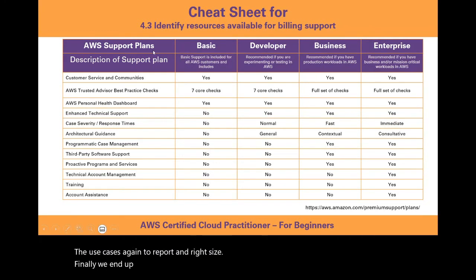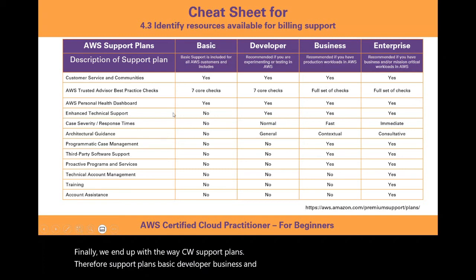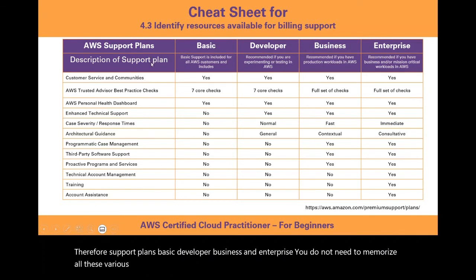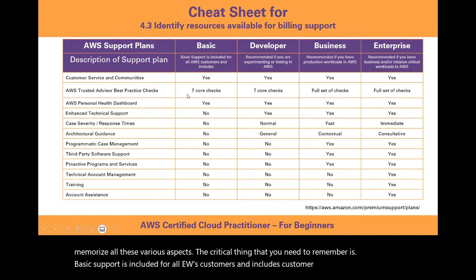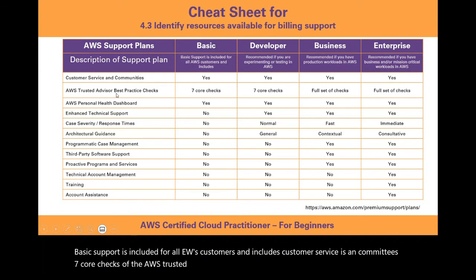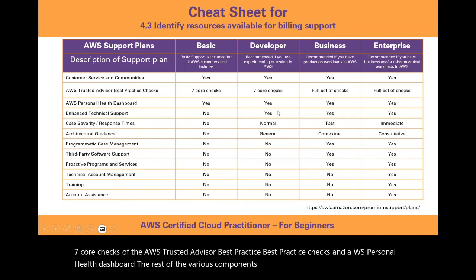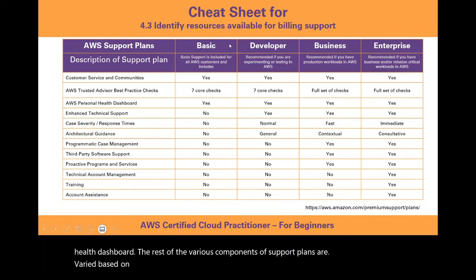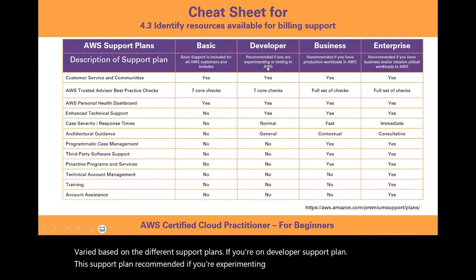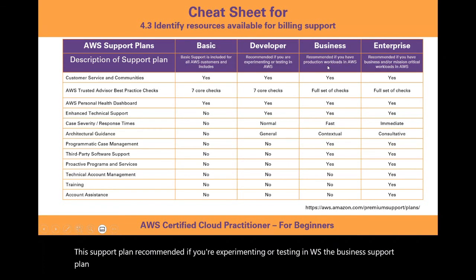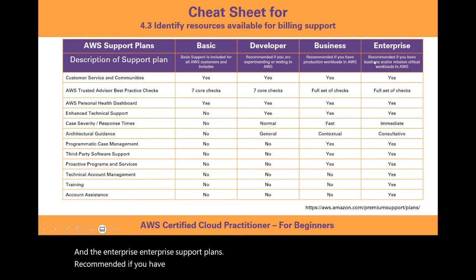The four AWS support plans are: Basic, Developer, Business, and Enterprise. Basic support is included for all AWS customers and includes customer service and communities, seven core AWS Trusted Advisor best practice checks, and the AWS Personal Health Dashboard. The Developer plan is recommended for experimenting or testing in AWS. The Business plan is recommended for production workloads. The Enterprise plan is recommended for business and/or mission-critical workloads in AWS.